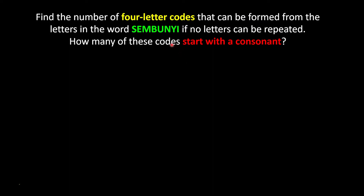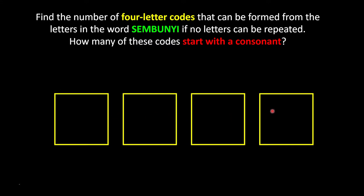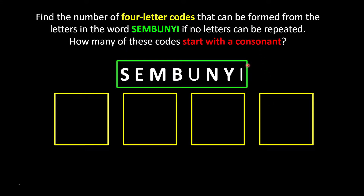For the first part of the question, we need to find the number of four-letter codes. I will prepare four slots. The codes must be formed from the letters in the word SEMBUNGI and no letters can be repeated. This means once I use a letter, it will no longer be available. Since the first part has no conditions, my first slot can pick any of the 8 letters — so there are 8 ways to choose.